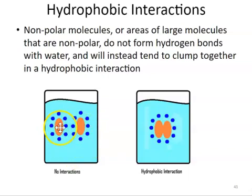Because these orange molecules consist largely of non-polar covalent bonds, so there's no areas of partial charge, then you won't get hydrogen bonding between the water molecules and these orange molecules. They'll just sort of ignore each other.